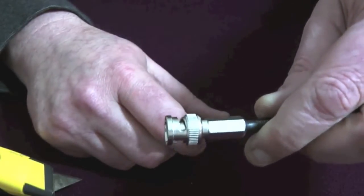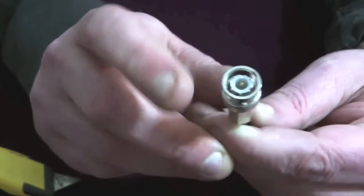Often it's worthwhile, if you have a meter, to check you've got no shorts between the inner and the outer. And there you are, one BNC twist-on connector.